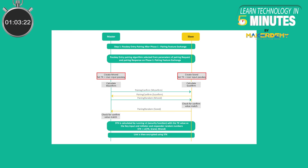1. Temporary Key (TK): The TK gets generated each time the pairing process occurs. The TK is used in legacy connections only. 2. Short Term Key (STK): This key is generated from the TK exchanged between the devices. The STK gets generated each time the pairing process occurs and is used to encrypt the data throughout the current connection. The STK is used in legacy connections only.